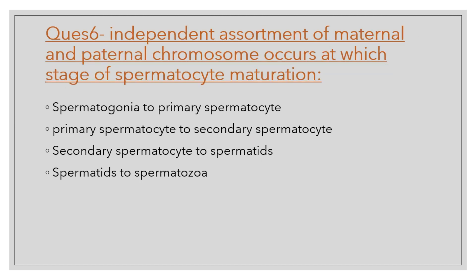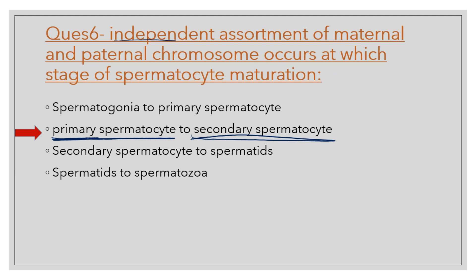Question number 6: Independent assortment of maternal and paternal chromosomes occurs at which stage of spermatocyte maturation — spermatogonia to primary spermatocyte, primary spermatocyte to secondary spermatocyte, secondary spermatocyte to spermatids, or spermatids to spermatozoa? The correct option is from primary spermatocyte to secondary spermatocyte, where there is independent assortment of maternal and paternal chromosomes.